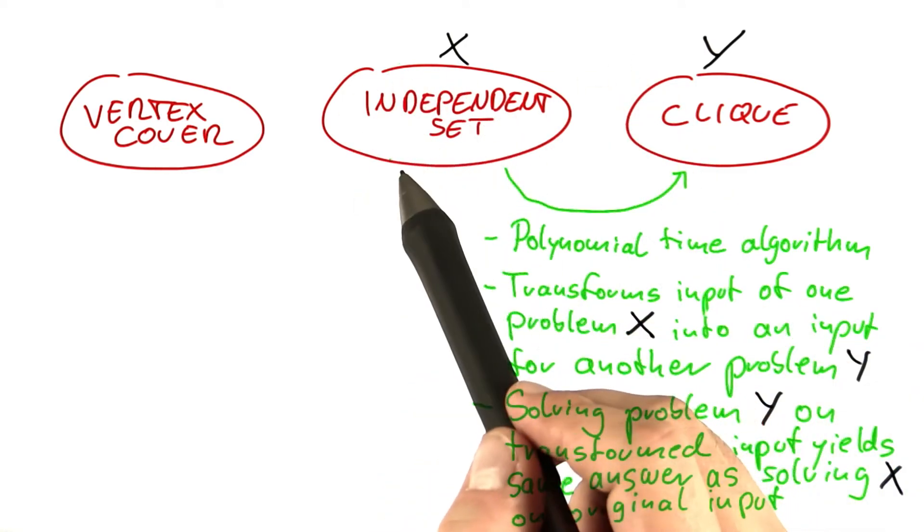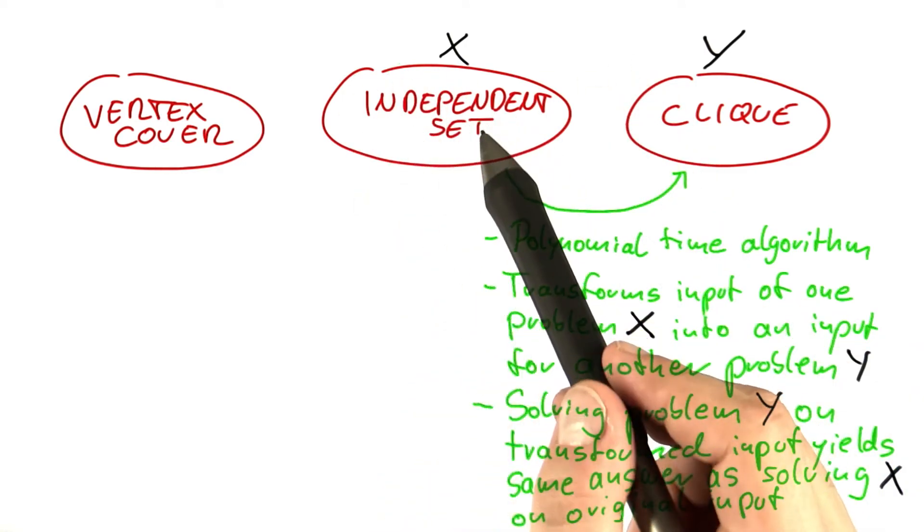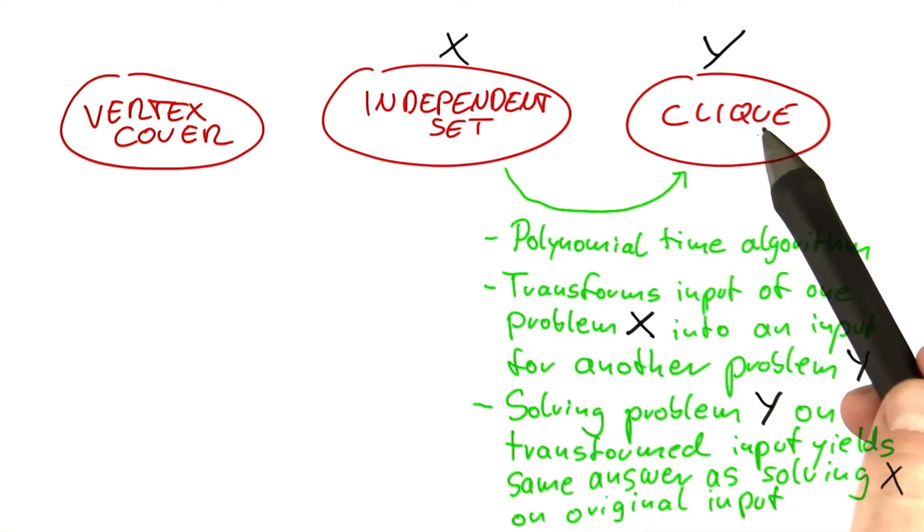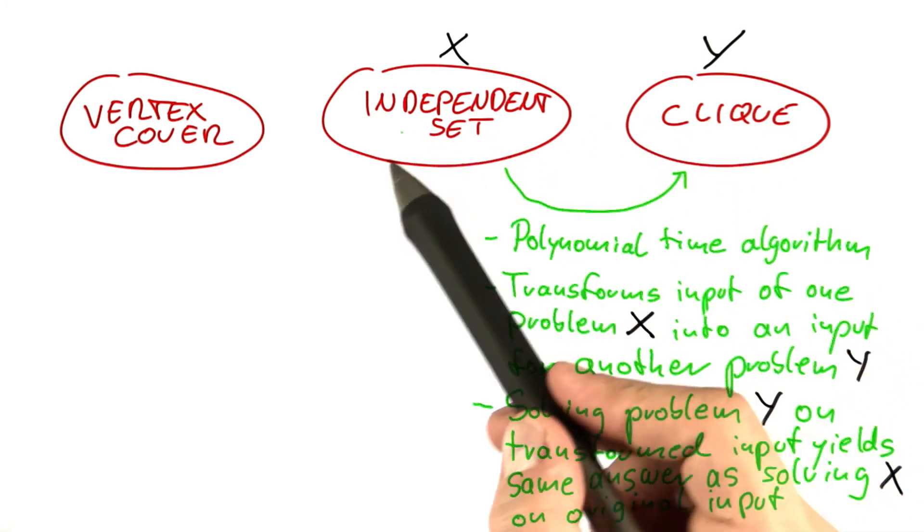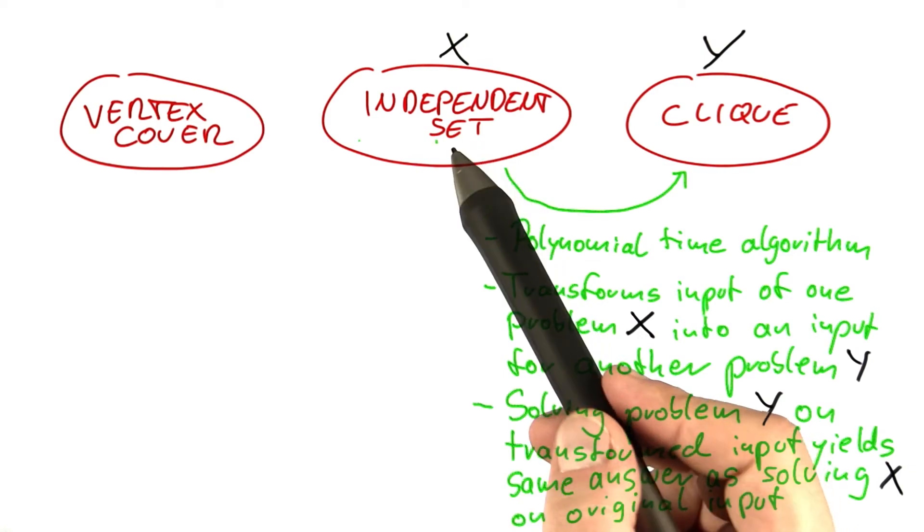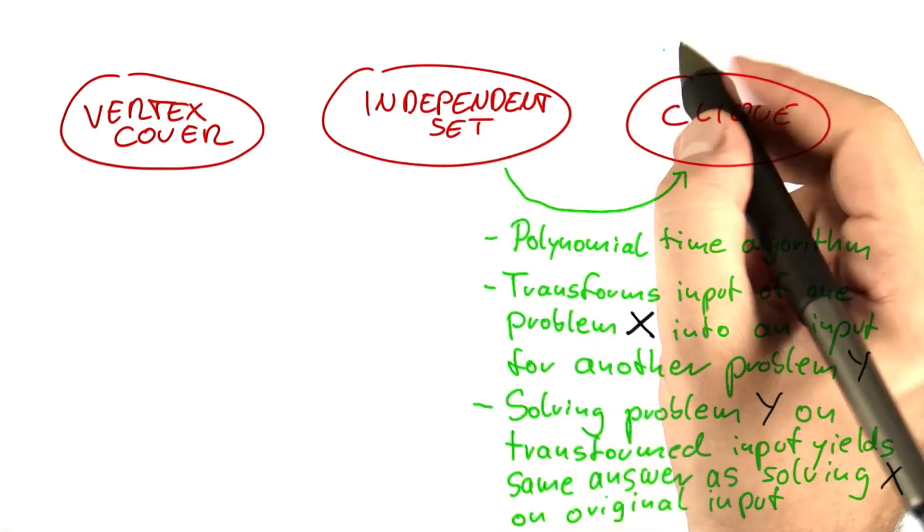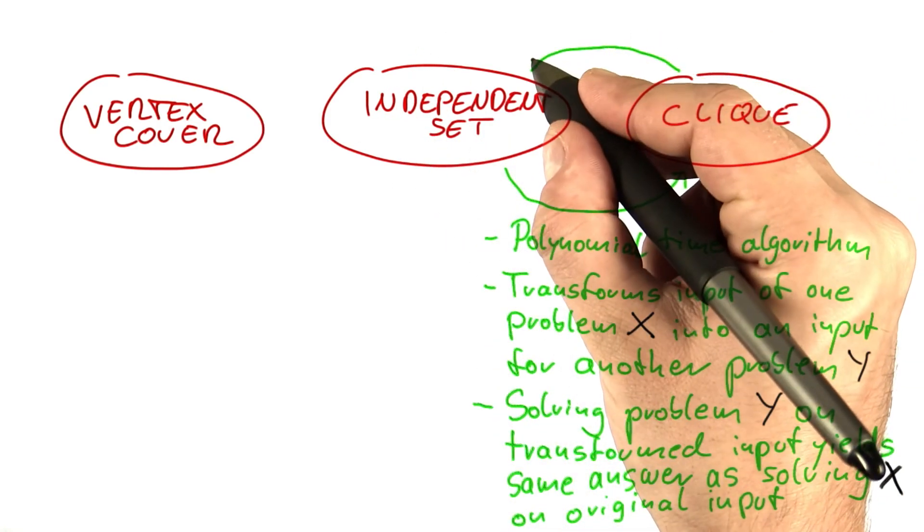So we took an input which was a graph to independent set, then transformed it into an input for clique. And we found out if we solve clique on that new input, then we would get the same answer that we would have gotten if we had solved independent set directly on the original input. And of course, we also saw that the transformation worked in the other way. So we could transform an input to clique into an input of independent set.